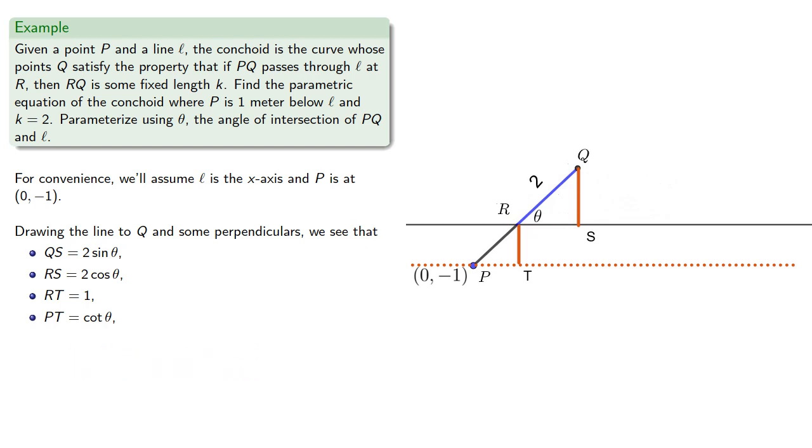This means our x coordinate will be cot θ plus 2 cos θ, and our y coordinate is 2 sin θ.